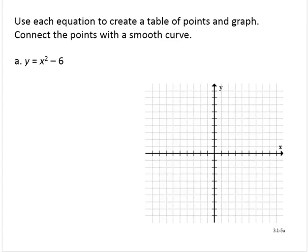So we have y equals x squared minus 6. What I'll do is create a table of x and y, and then the ordered pairs x comma y.